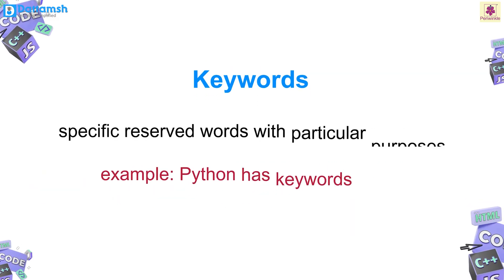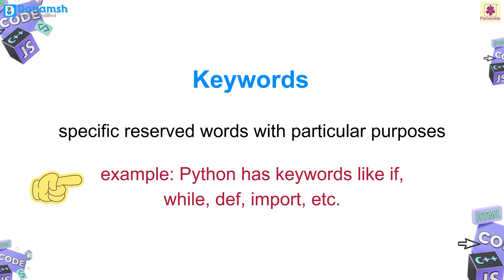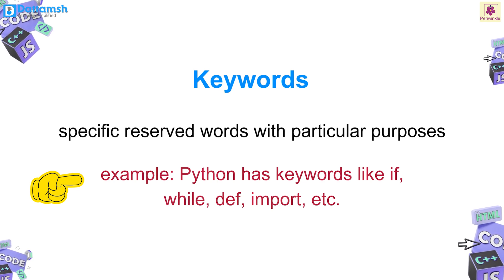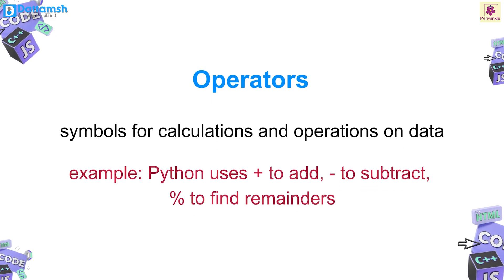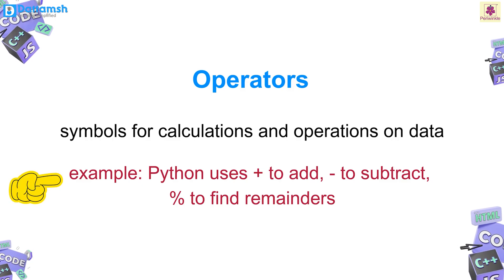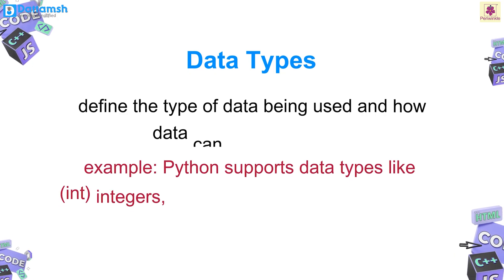Keywords are specific reserved words with particular purposes. For example, Python has keywords like if, while, def, import, etc. Operators are symbols for calculations and operations on data. For example, in Python we use the addition symbol to add, the subtraction symbol to subtract, and the percentage symbol to find remainders.